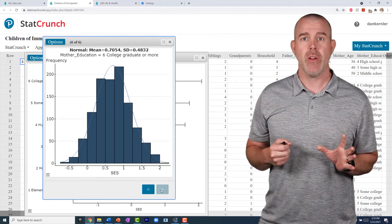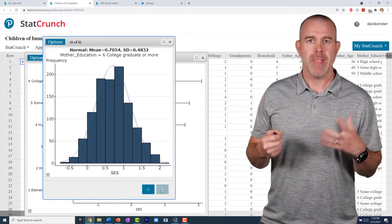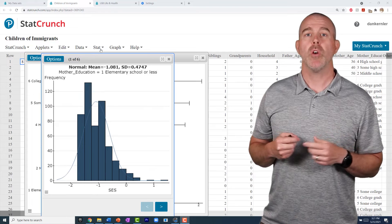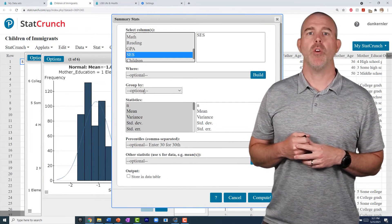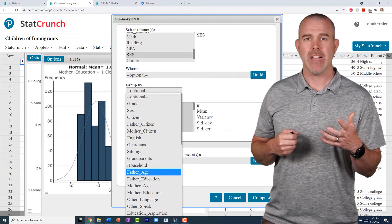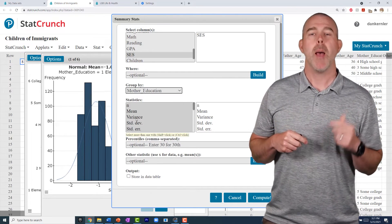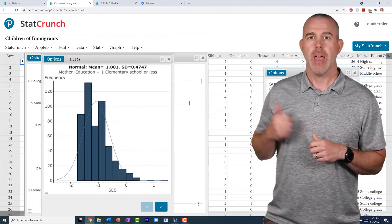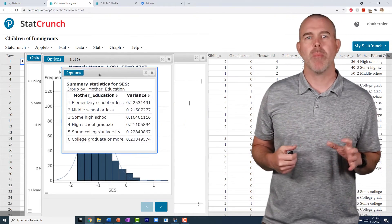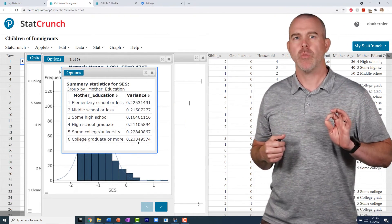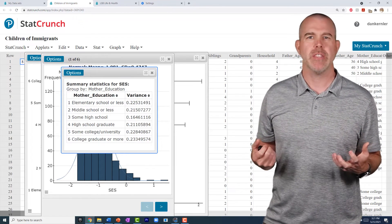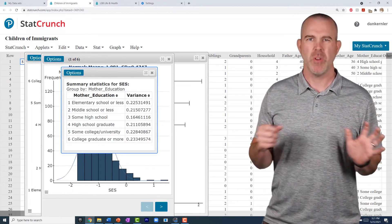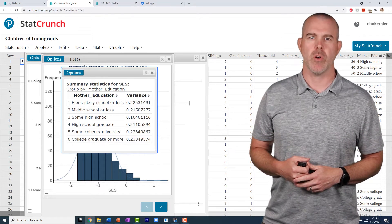We do also need to check that the variances are all the same or not markedly different. So we'll go to stat, summary stats, columns, and we'll choose our SES and then group by mother's education. And you can see all these variances. Remember, we're worried about the largest one being more than double the smallest one, and they are all fairly similar here. So we should be good. We should be fair to assume that the variances are all the same.